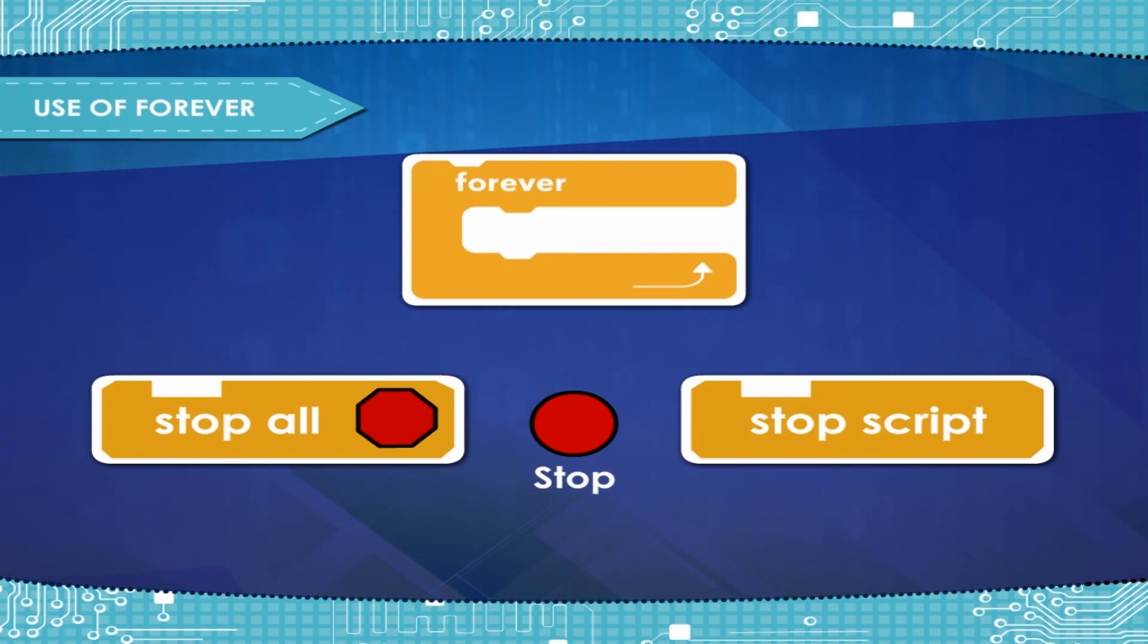Due to this infinite loop, the block has no bump at the bottom. Having a bump would be pointless, as the blocks below it would never be activated.